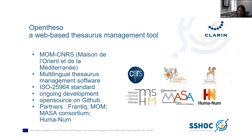OpenTESO is a thesaurus management software that complies with the ISO standard for thesauri. It has been developed at MOM-CNRS since 2006. It is distributed in open source on GitHub, and it is supported by many partners, including the Maison des Sciences de l'Homme Consortium and Huma-Num.